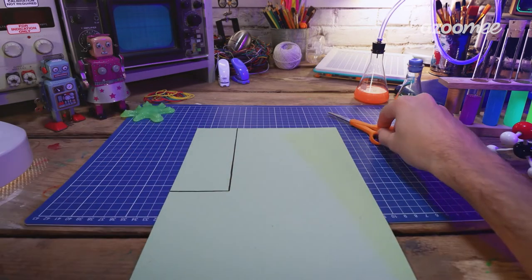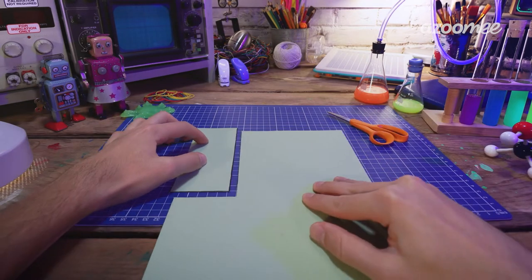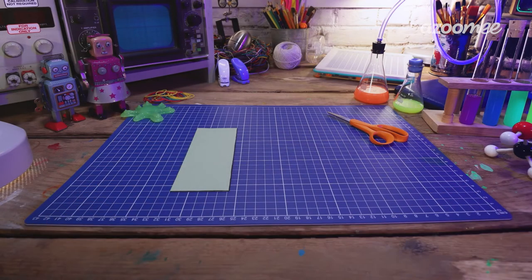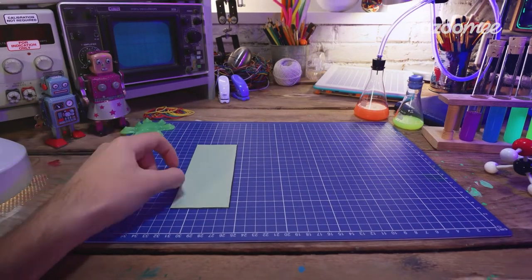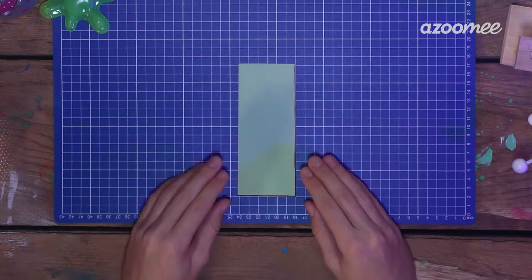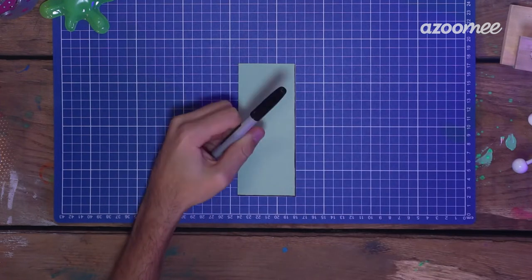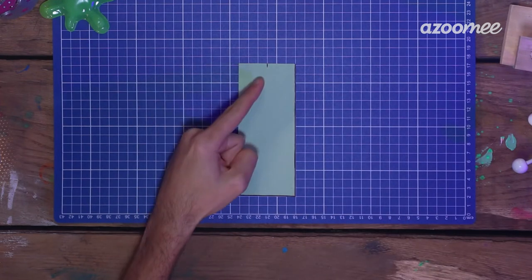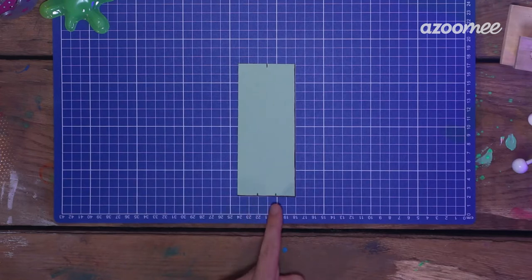Then grab your scissors and cut this out. Using your marker and your ruler again, mark out the halfway points at the top and divide the bottom into thirds.